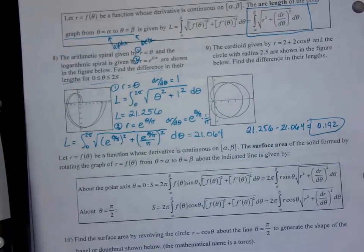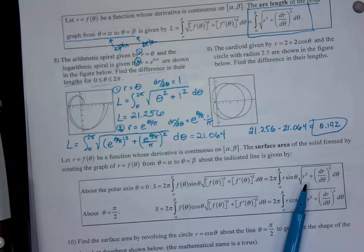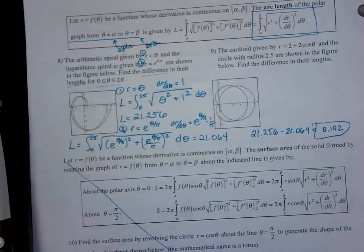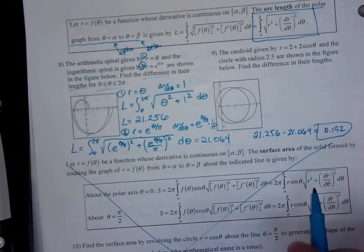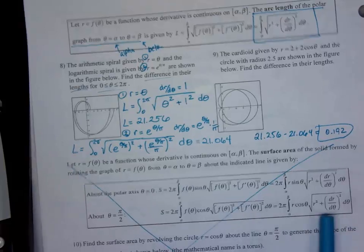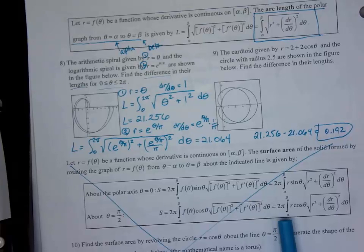Skip problem 9. Mark out the bottom half of this page — that's surface area of revolution, which we are not doing. And we are done for today.